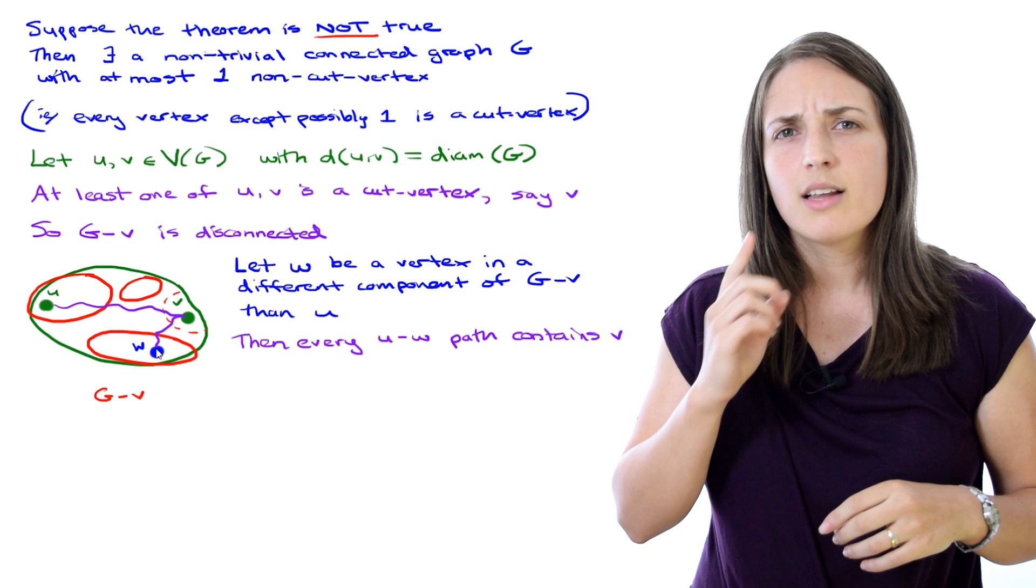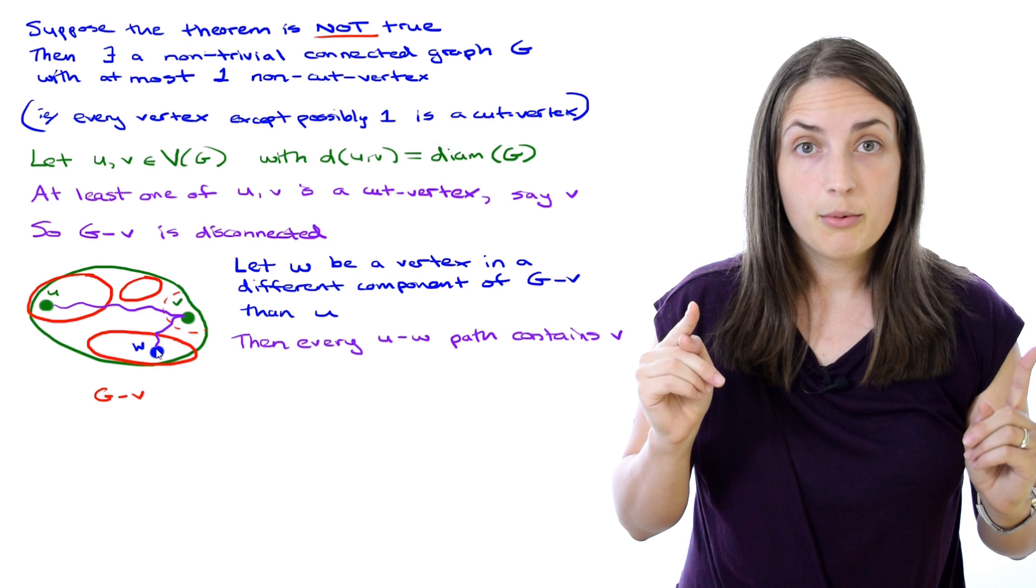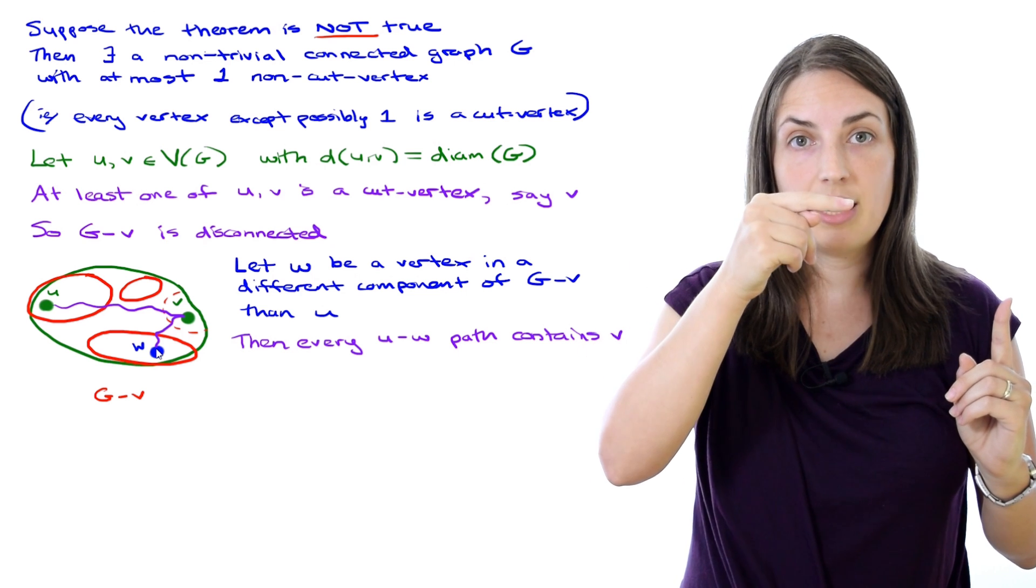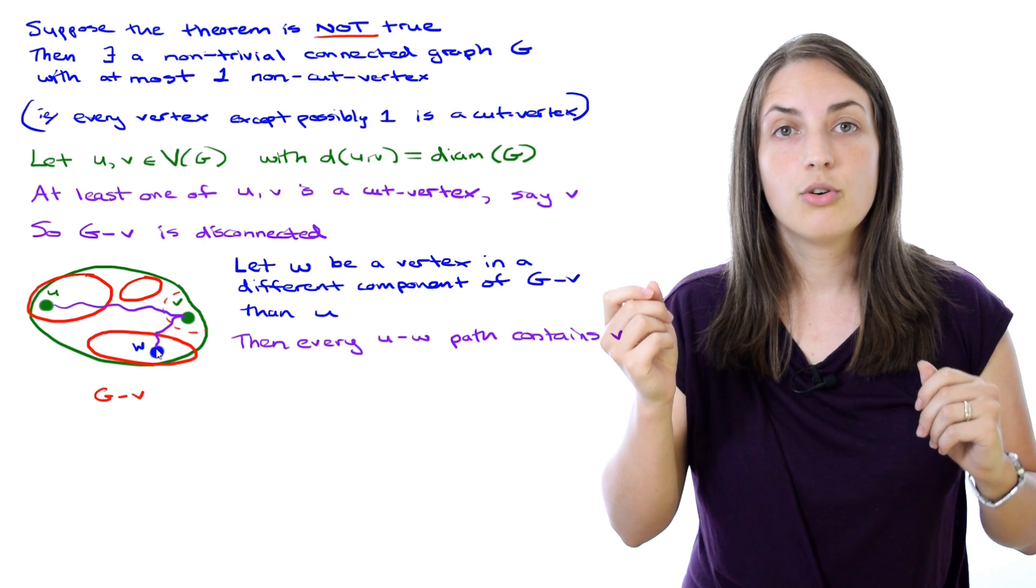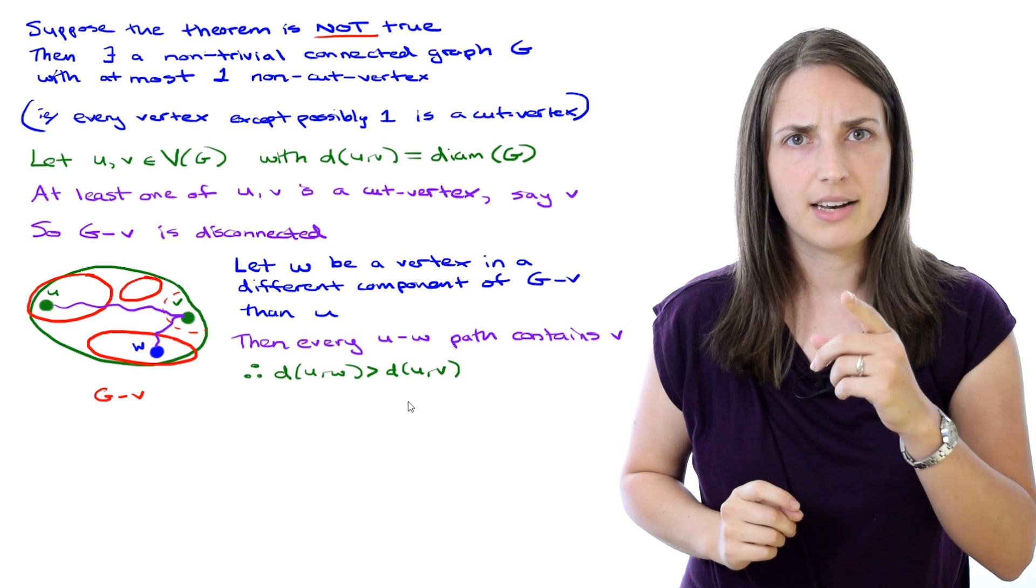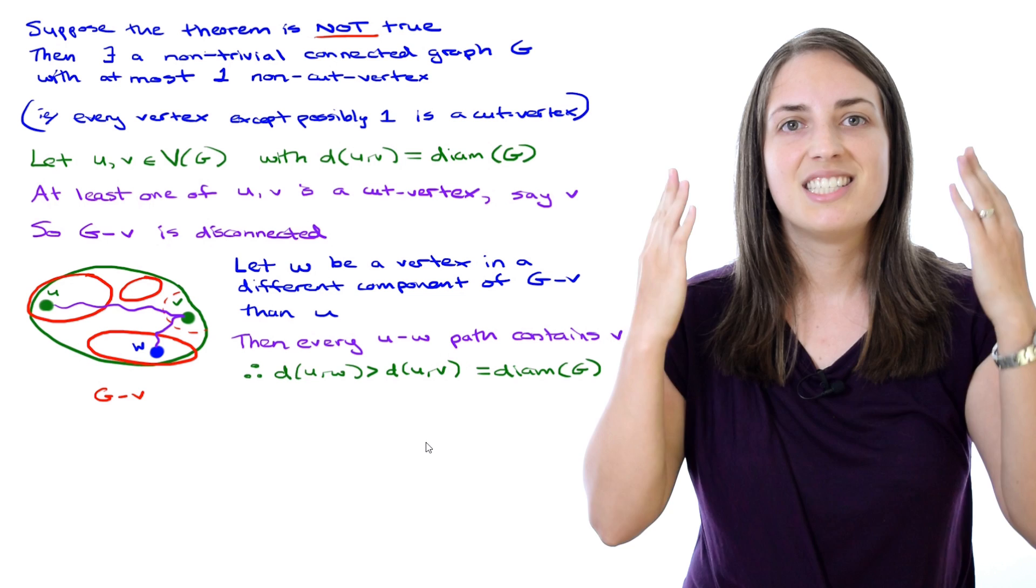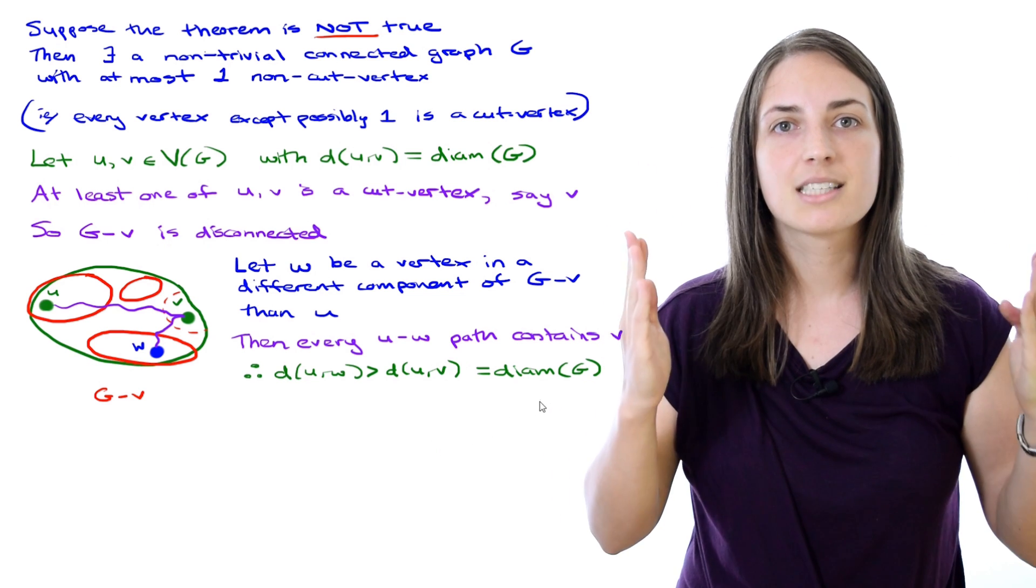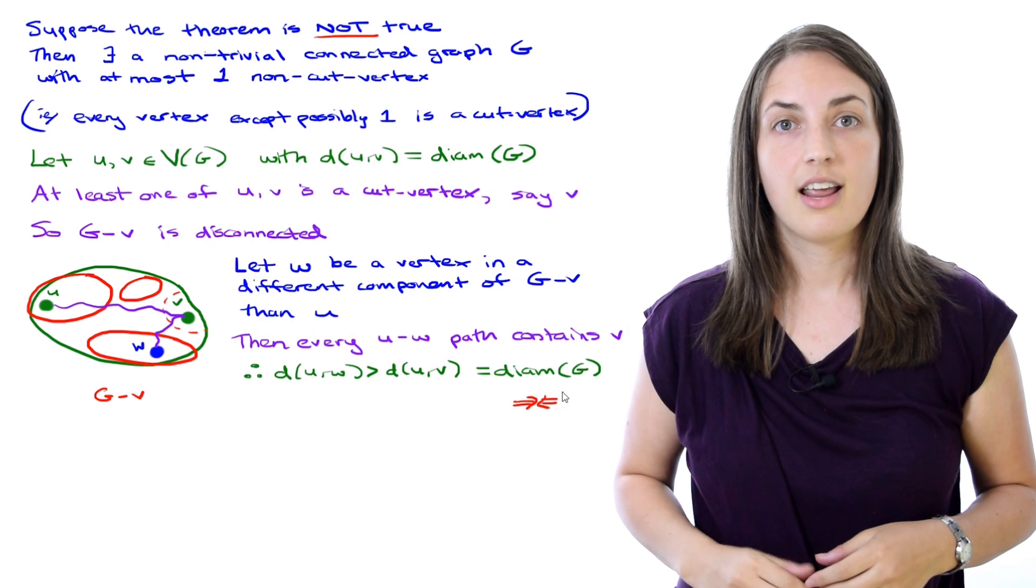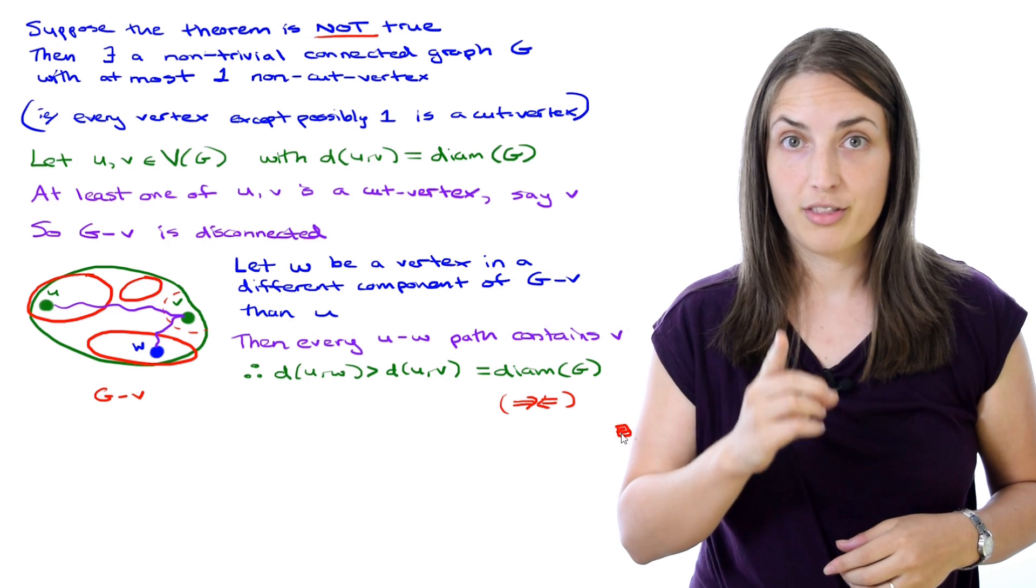Well now let's think about what this means. The distance from u to w has to go through a path that first hits v. That means the distance from u to w is bigger than the distance from u to v. But the distance from u to v is equal to the diameter, which is defined to be the maximum distance in any pair of vertices in our graph. So that's the contradiction. That cannot happen, and therefore it's not true that the theorem is false.